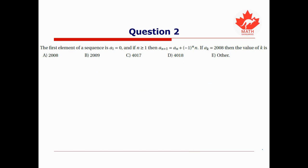For this next question, we're told that the first element of a sequence is a₁ = 0, and for n ≥ 1, we set a_{n+1} = a_n + (−1)^n · n. If a_k = 2008, what is the value of k?